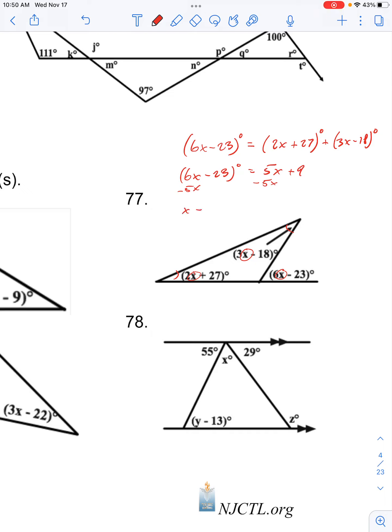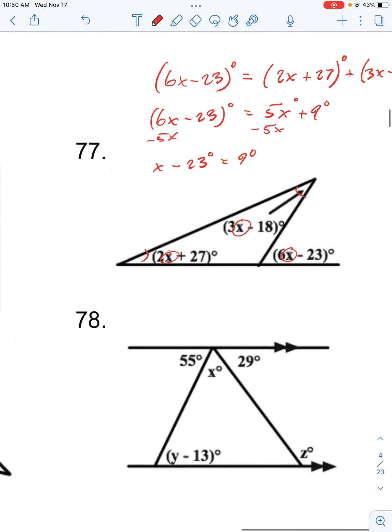So x minus 23 degrees is equal to 9 degrees. Then adding 23, we'll have x equals 32.